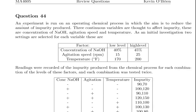As an initial investigation, two variable settings were selected. Concentration of NaOH at 40% and 45%, agitation speed at 15 and 25, and temperature at 170 and 200. We're going to denote the low levels as minus and the higher level as plus. In some cases we might go minus 1, plus 1, and if there are three levels with a mid level, you might go minus 1, 0 and plus 1.